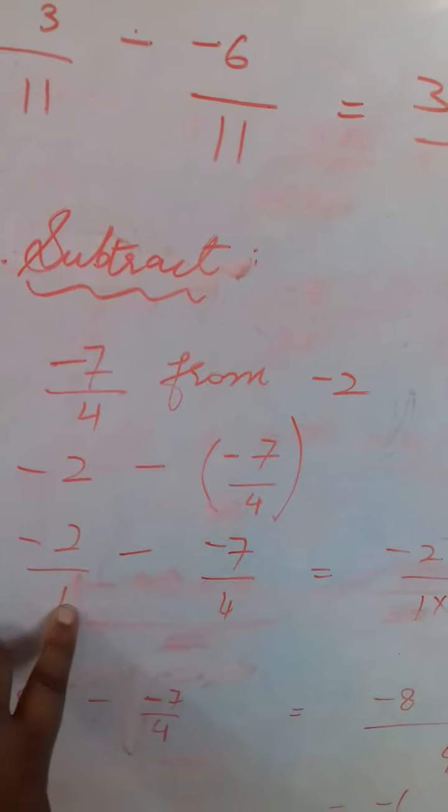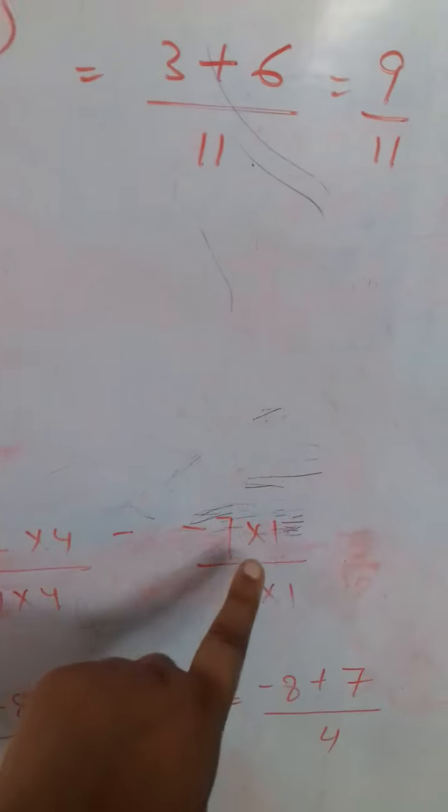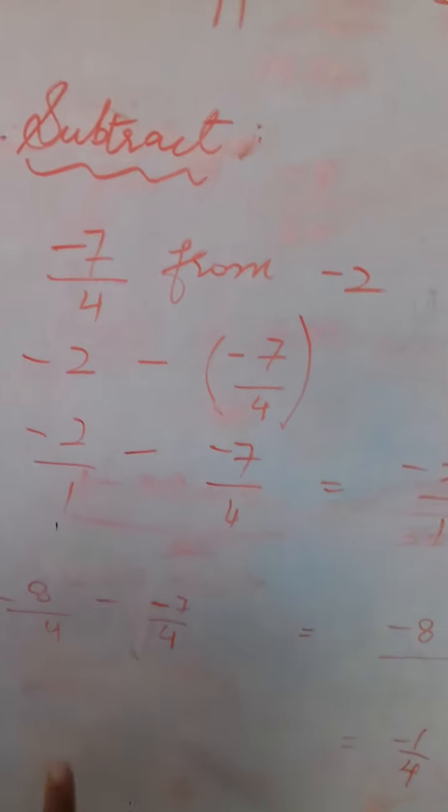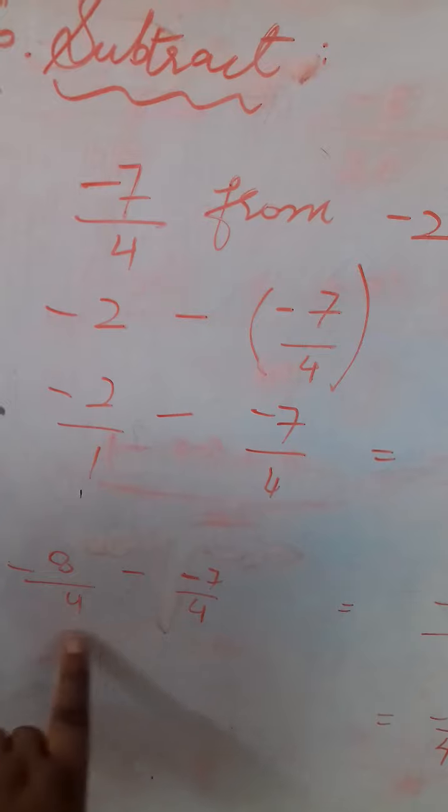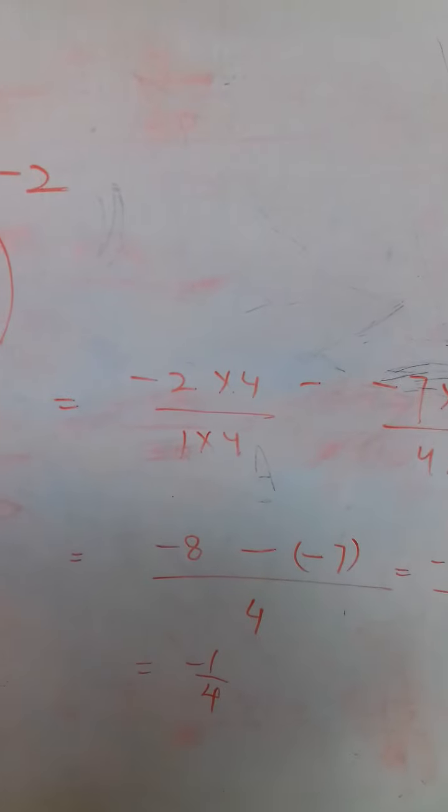So, 1 4 is a 4. So, 2 into 4. 4 ones are 4. So, minus 7 into 1. Now, 2 4s are 8 and 7 ones are 7. Again, the denominators are same now. So, write it here. So, minus 8 minus minus 7.